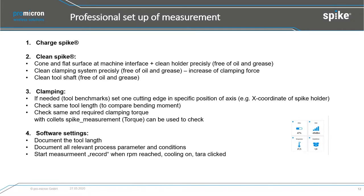To set up a professional measurement: first, charge the tool — without battery you cannot run the operation. If you plan a test the next day, put the tool holder on the charger the night before and it will be fully charged. Second, and very importantly, many customers in production don't clean the tool holder perfectly. The cone and flat surface at the machine interface must be clean — free of oil and free of grease.